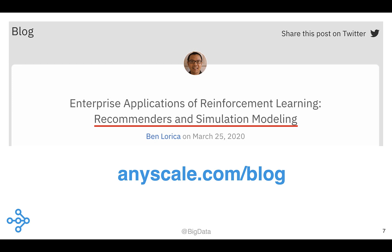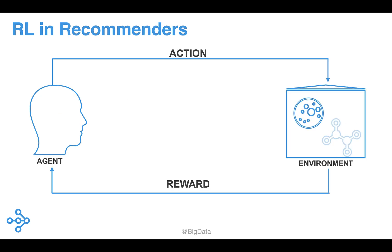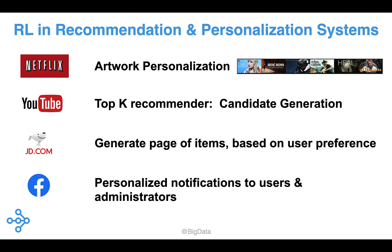Several tech companies have given talks or published articles describing how they're beginning to incorporate RL into existing recommenders or personalization systems. The idea is to utilize real-time user feedback and behavior in recommender systems by building RL agents that optimize desired reward functions. Some common examples of reward functions used in this setting include user engagement or long-term satisfaction. This is just a partial list of companies who have incorporated RL into recommenders, and they have had to overcome several challenges to integrate reinforcement learning into their large-scale recommendation systems.